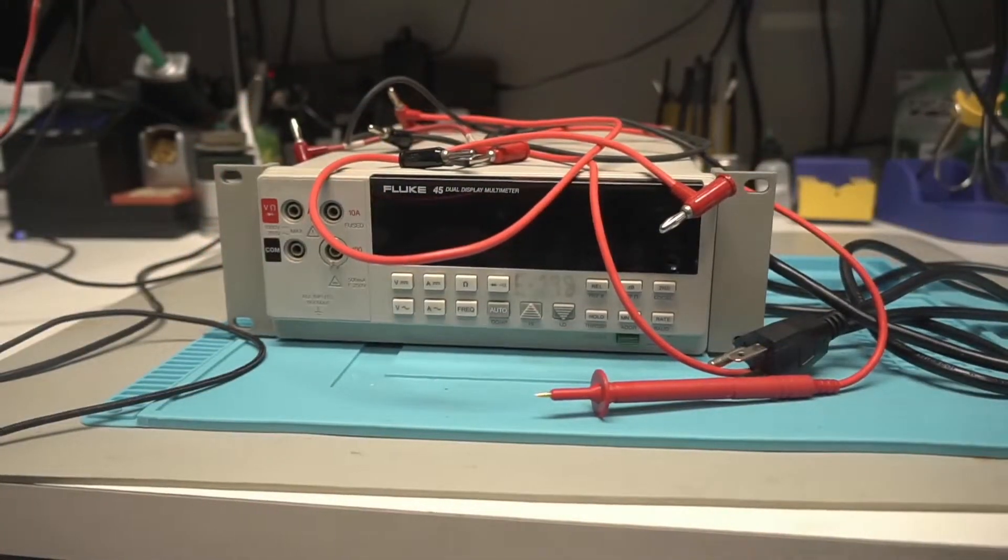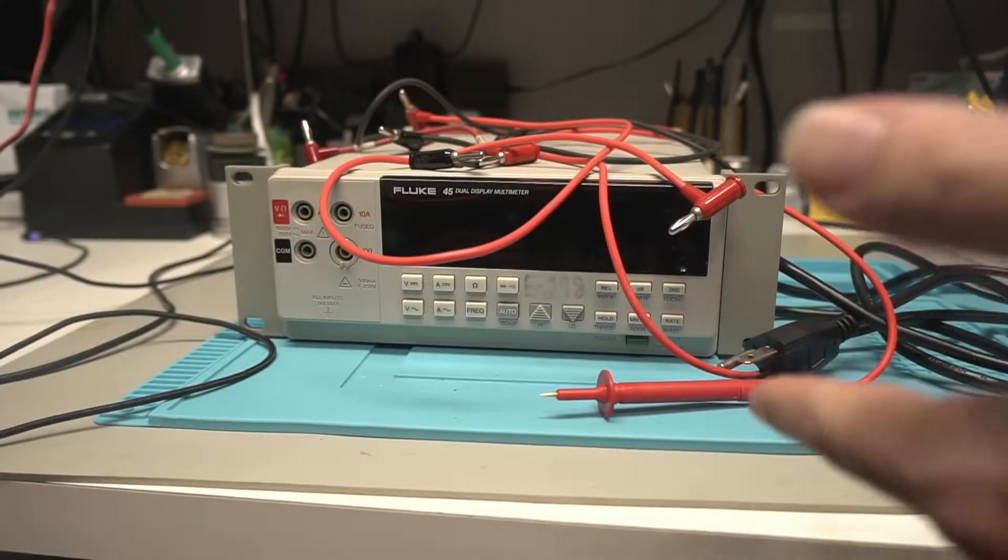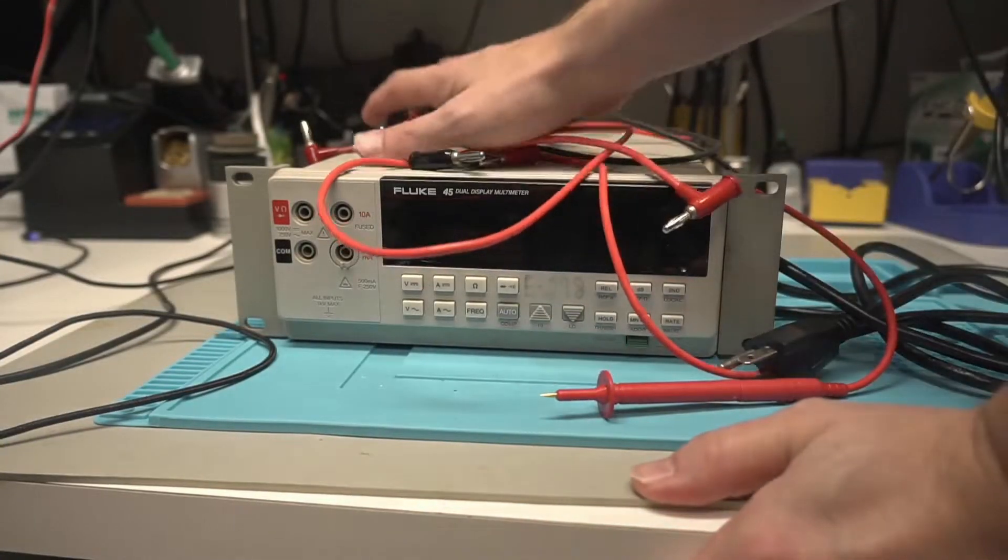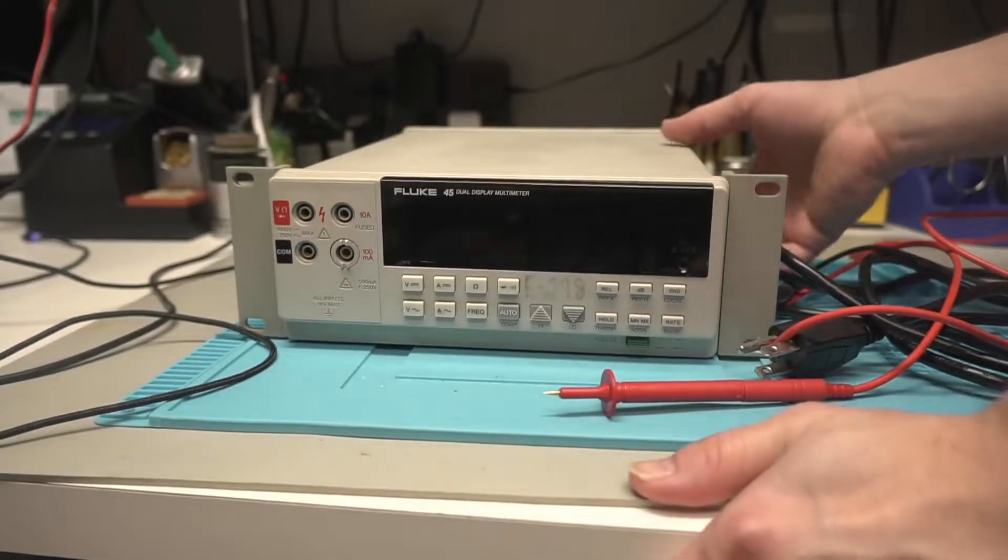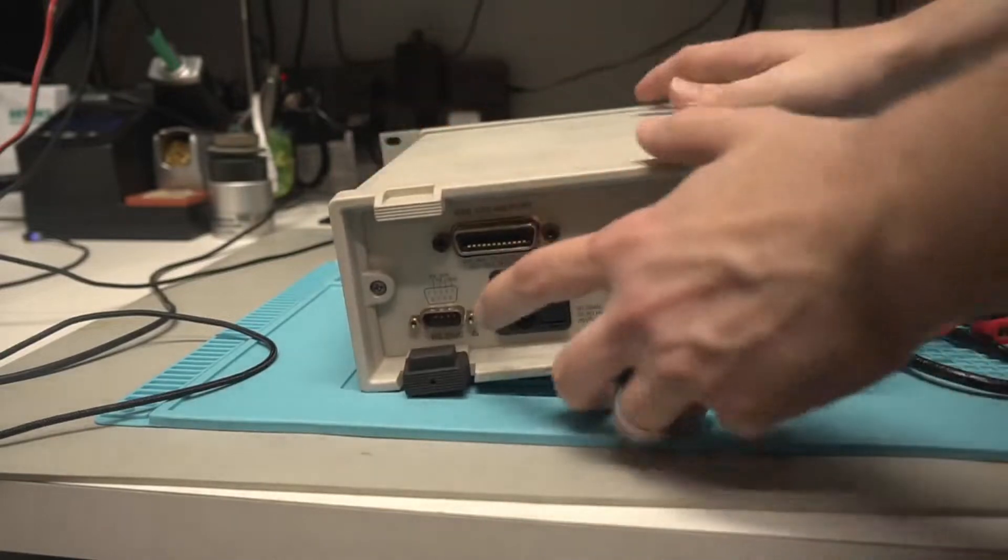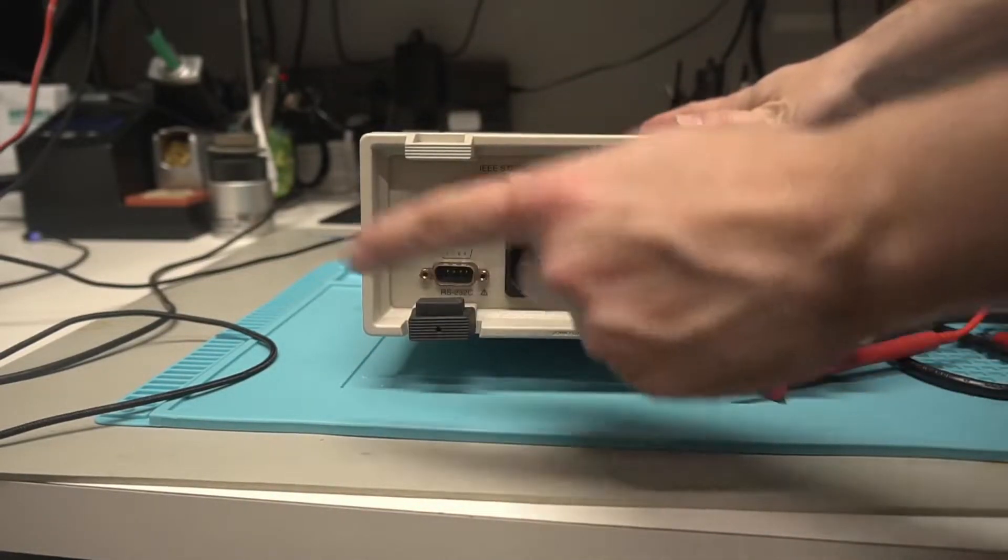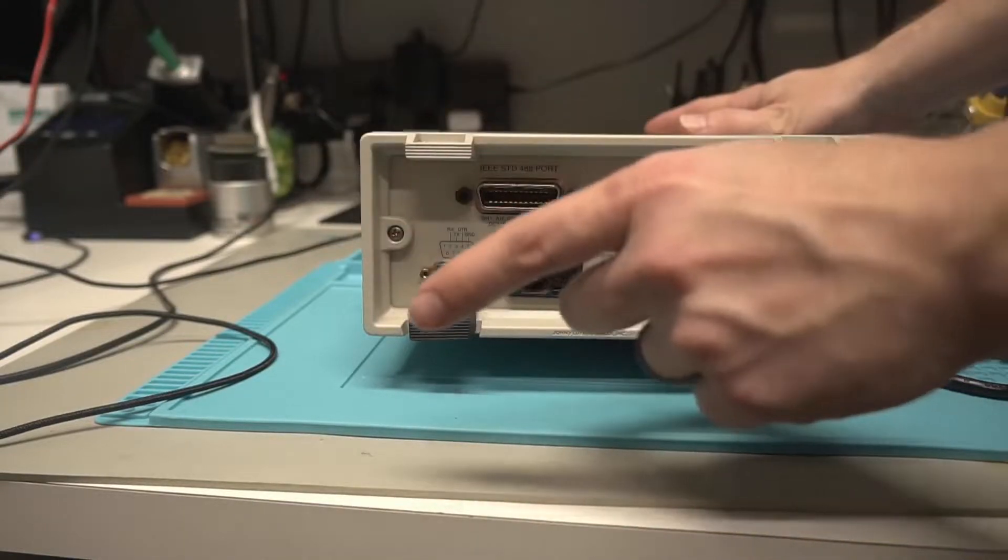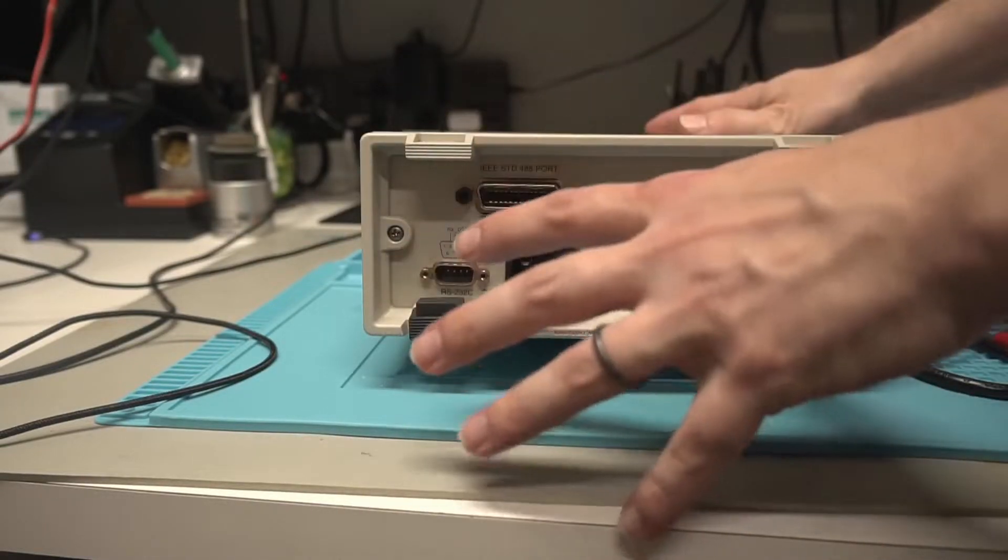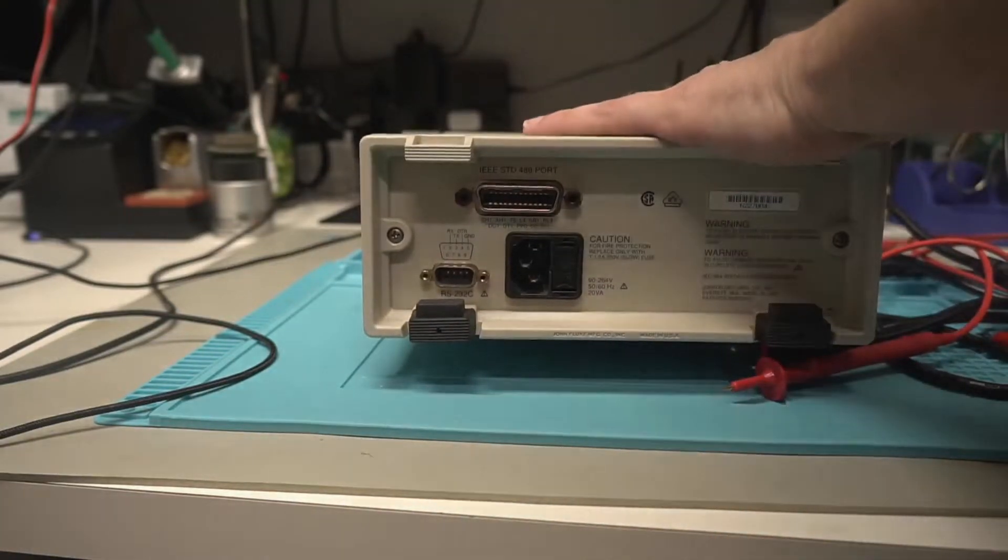As you can tell, this thing's not brand new, but of course it's not. It's a 30 year old multimeter. So why am I so excited about a 30 year old multimeter? Well, truth of the matter is on the back of this thing we have a serial port out, which means I can connect it to the computer and I can display the reading from this thing on screen while I'm doing videos. So that's the reason why I bought this thing.